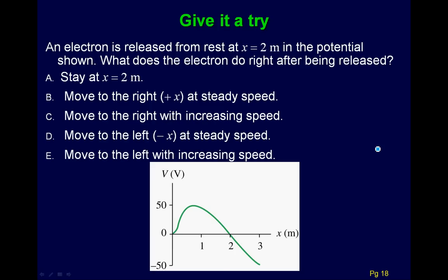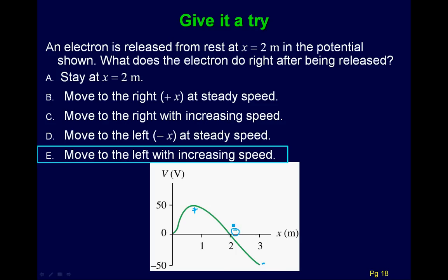One last question: an electron is released from rest at x equals 2 meters, and the potential is shown. What does the electron do right after being released? It moves to the left with increasing speed. The potential looks like there's a positive region on one side, and the electron is attracted toward it. Using delta U equals Q delta V — as the electron moves toward the higher potential, it has a negative charge, so its potential energy decreases and its kinetic energy increases, giving it increasing speed.